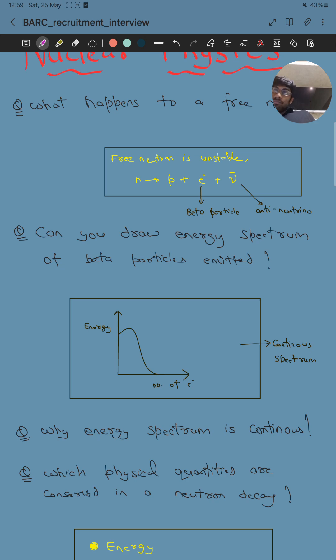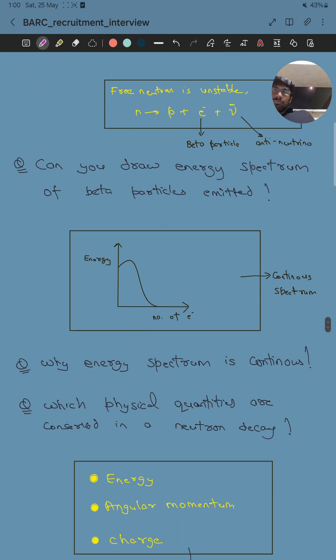Then he asked me, can you draw the energy spectrum of the beta particles emitted? In beta decay, the electrons emitted are of continuous energy, so the spectrum is continuous. You have to draw this plot.